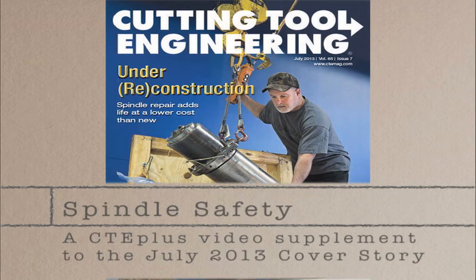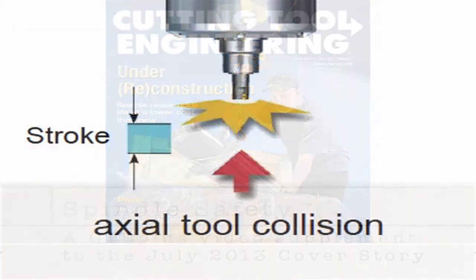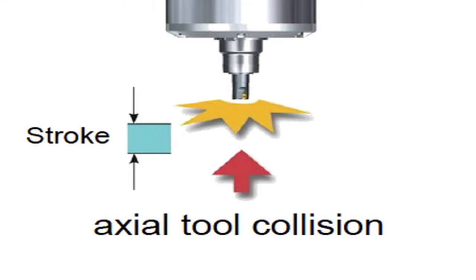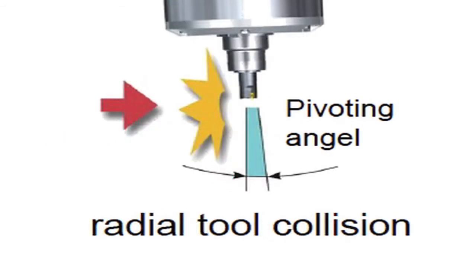Spindle collisions - that dreaded moment when a machine tool crashes into a workpiece - can cause major damage to a spindle, and that usually means another costly repair. By most estimates, spindle collisions account for a majority of all damaged spindles.